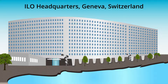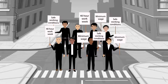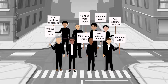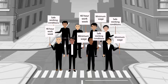Headquartered in Geneva, Switzerland, the ILO was created in 1919 by the Treaty of Versailles — the same agreement that ended World War One. The decision to establish an organization focused on labor came out of the idea that world peace should be based on social justice.